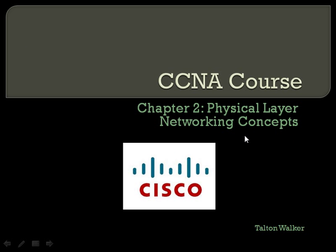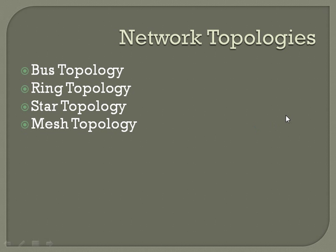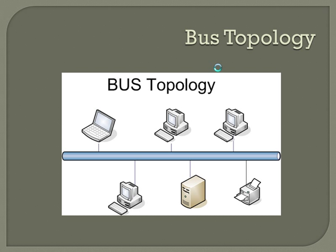Chapter two covers the physical layer and networking concepts. The first part talks about different types of networking topologies. We'll go over each in a little more detail: bus topology, ring topology, star topology, and mesh topology. The bus topology is where all individual nodes are connected on a single medium. It's very cheap, but it has no capability for redundancy — if the medium is broken at any point, you'll lose connectivity to half the network.